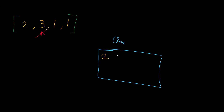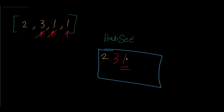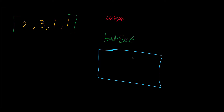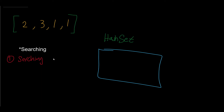We advance the pointer — is 3 in the box? No, so we put 3 in the box and advance. Is 1 in the box? No, we add 1, then advance. Is 1 in the box? We check — yes, we find 1, and we return true: we have a duplicate! So what exactly is this box? Let me replace the word 'box' with 'hash set.' A hash set is basically a collection of unique elements — it contains values but does not allow any duplication.